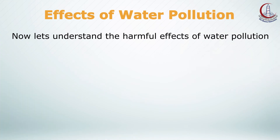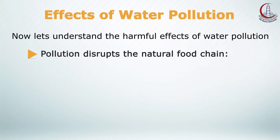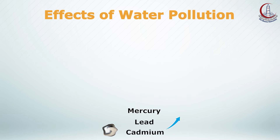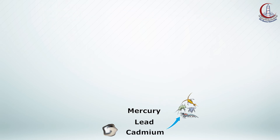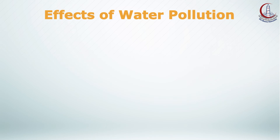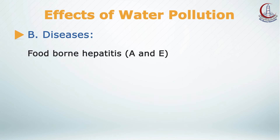Water pollution disrupts the natural food chain. Pollutants such as mercury, lead, and cadmium are eaten by tiny animals; later these animals are consumed by fish and shellfish, and the food chain continues to be disturbed at all higher levels. Water pollution can also affect our health, causing diseases. Foodborne hepatitis A and E can be transmitted through contaminated water. In many poor nations there are outbreaks of cholera and other diseases as a result of poor drinking water treatment from contaminated waters.